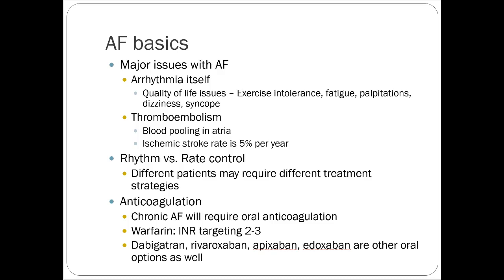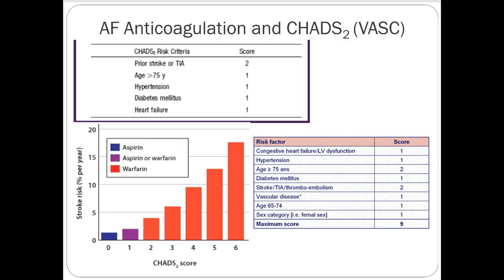The two main treatment strategies for AFib are rhythm control versus rate control. You can control people's heart rate and also try to control their rhythm with antiarrhythmics — different patients may require different approaches. Regarding anticoagulation, chronic atrial fibrillation patients will require anticoagulation, which can be warfarin targeted to a specific INR or one of the newer oral anticoagulant options.